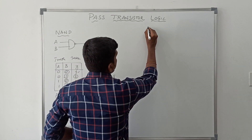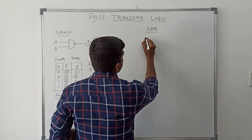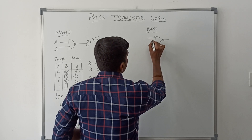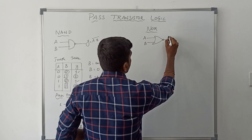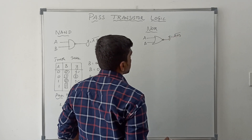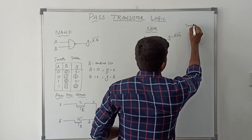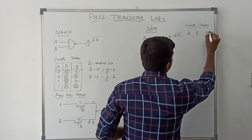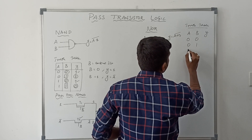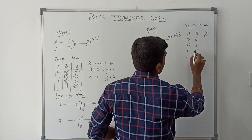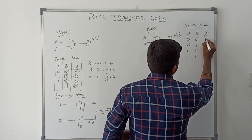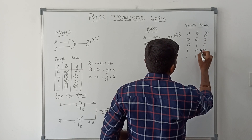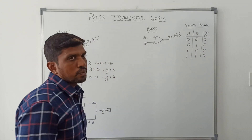Now we move on to the NOR gate. Here is the symbol of NOR gate. Inputs are A and B, and Y is the output. The Boolean expression is Y equals A plus B, bar — the whole complement. It makes 4 combinations of input. The output of NOR gate is: for inputs 0,0 the output is 1; for 0,1 the output is 0; for 1,0 the output is 0; for 1,1 the output is 0. That is the truth table of NOR gate.